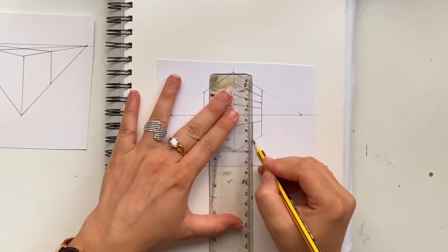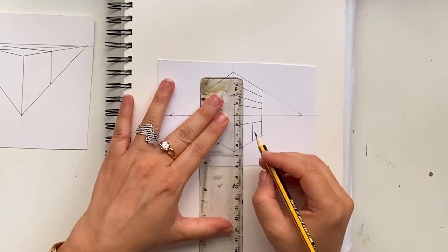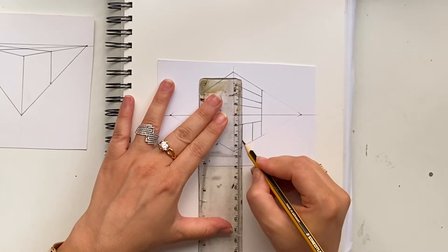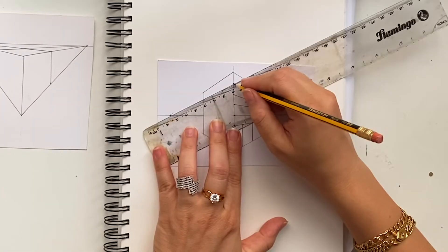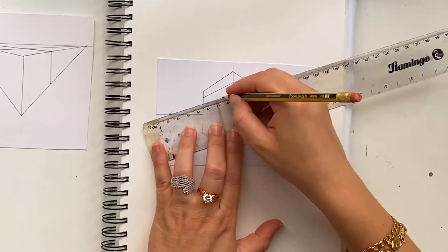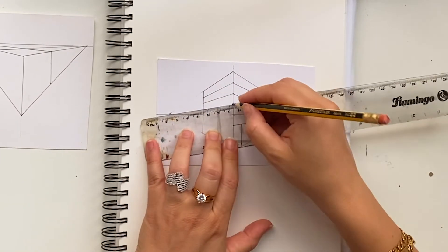You can draw a door by adding two vertical lines. Now complete the details on the other side of the building. You need to aim to the vanishing point.